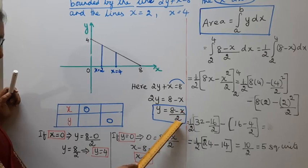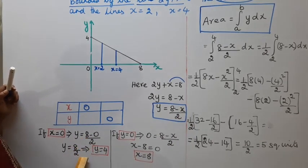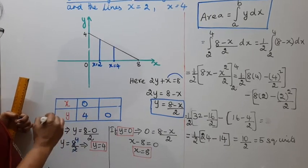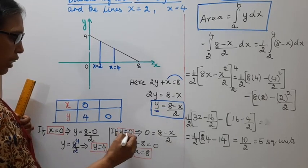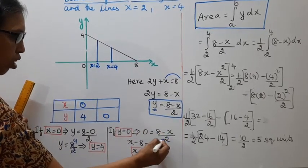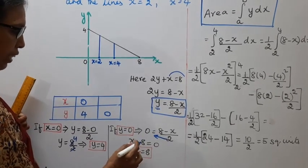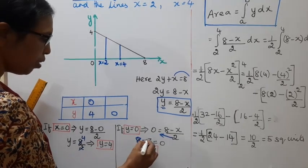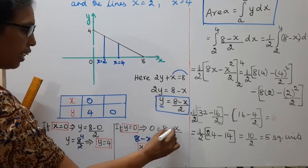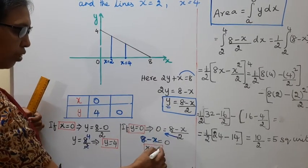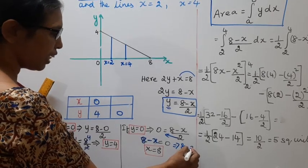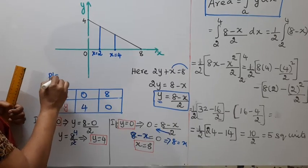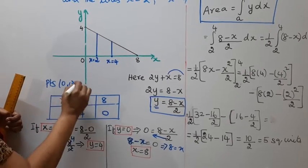y equal to 8 minus x by 2. When x equal to 0, y equal to 8 by 2, that is y equal to 4. When y equal to 0, 8 minus x equal to 0, so x equal to 8. The points are (0, 4) and (8, 0).